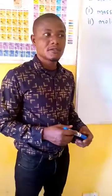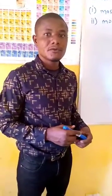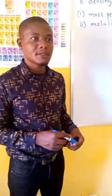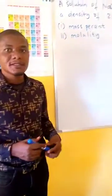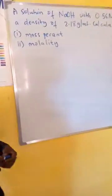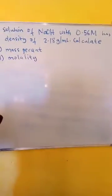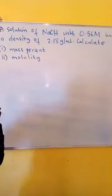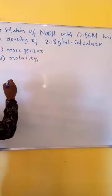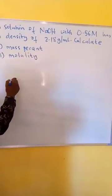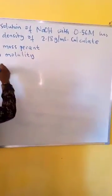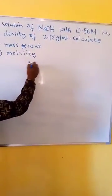Hi, in this tutorial we want to see how we can calculate mass percent and molality from density and molarity. Example: a solution of sodium hydroxide with 0.56 molar has a density of 2.18 gram per milliliter. Calculate the mass percent and molality of the solution.